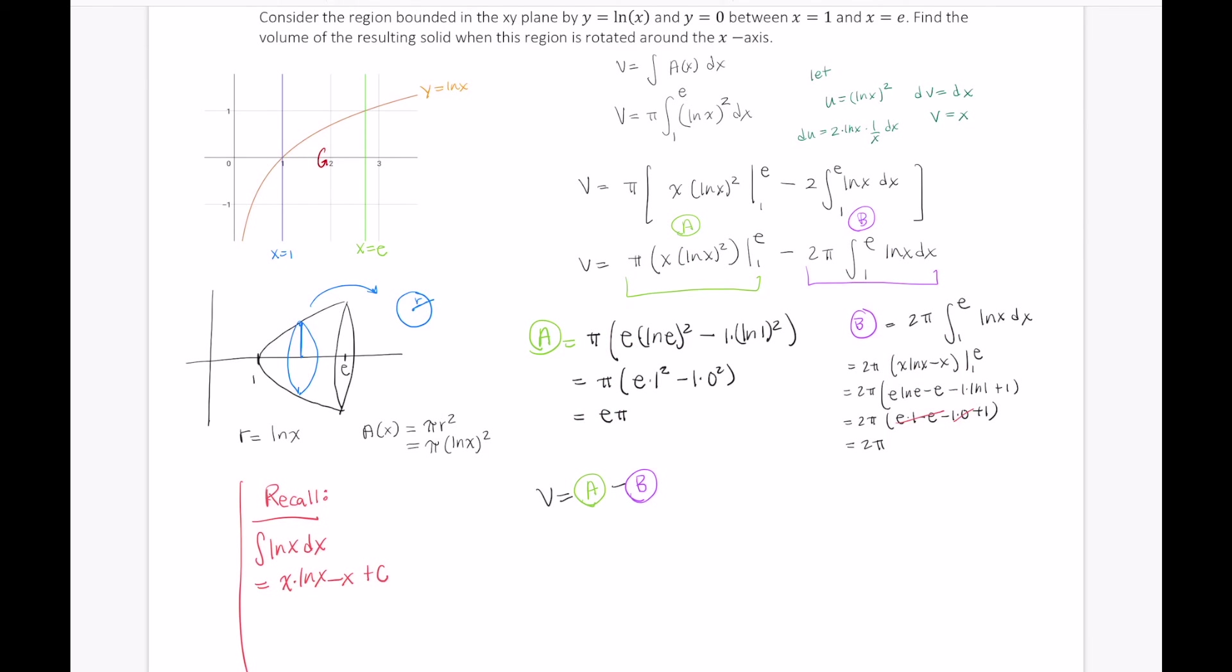All right, now that that is all done, we can put this all together. Recall our volume is just A minus B. A works out to be eπ, and B worked out to be 2π. So the volume is eπ minus 2π, or just π times e minus 2.